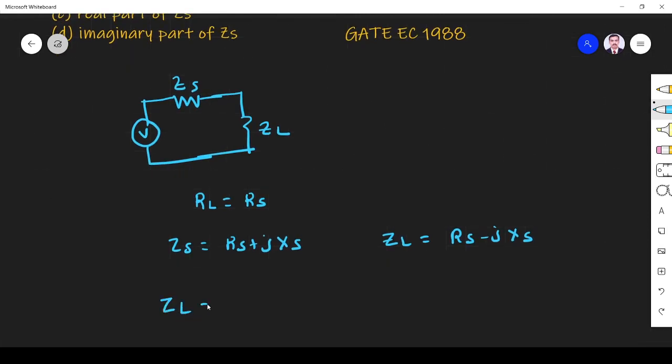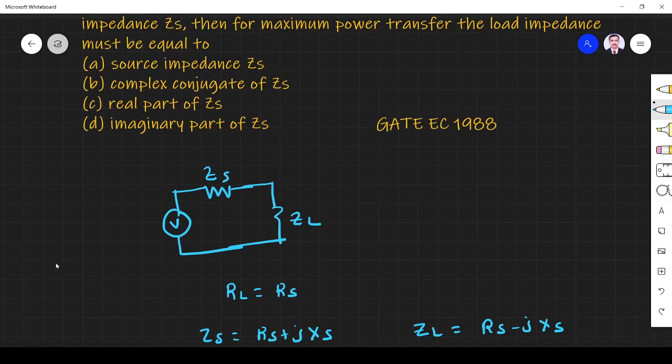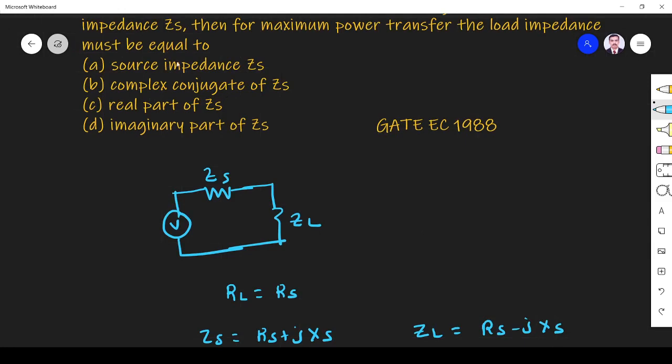Then only the maximum power transfer will occur. So the answer is ZL must be equal to complex conjugate of ZS. Option B is the right answer.